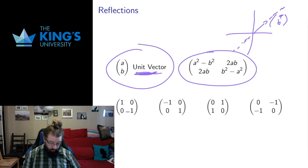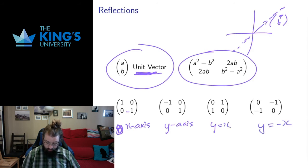I can give you some examples. This is a reflection over the x-axis. This is a reflection over the y-axis. This is a reflection over the line y equals x, and this is a reflection over the line y equals negative x. Take this matrix, apply it to some vector, and you can check that it will be reflected over this line, no matter what vector you put there.